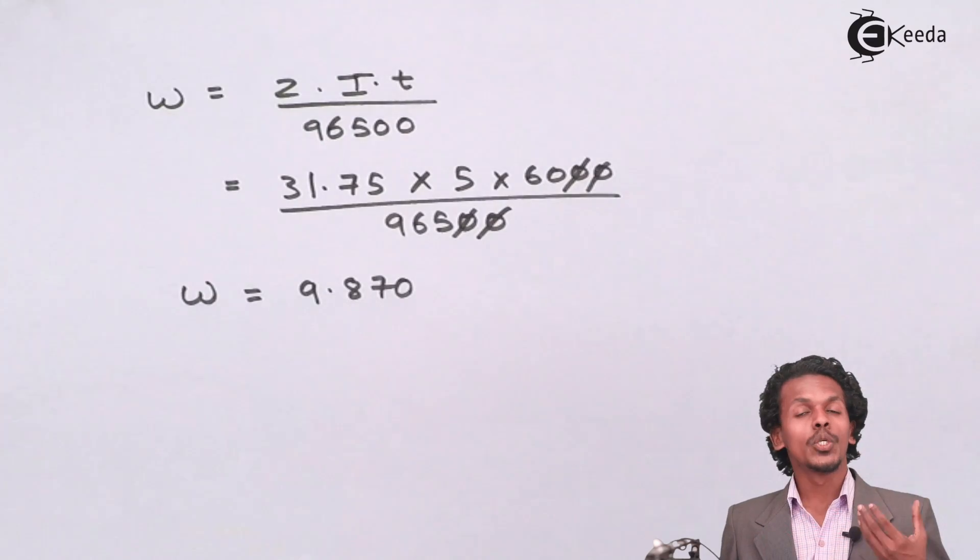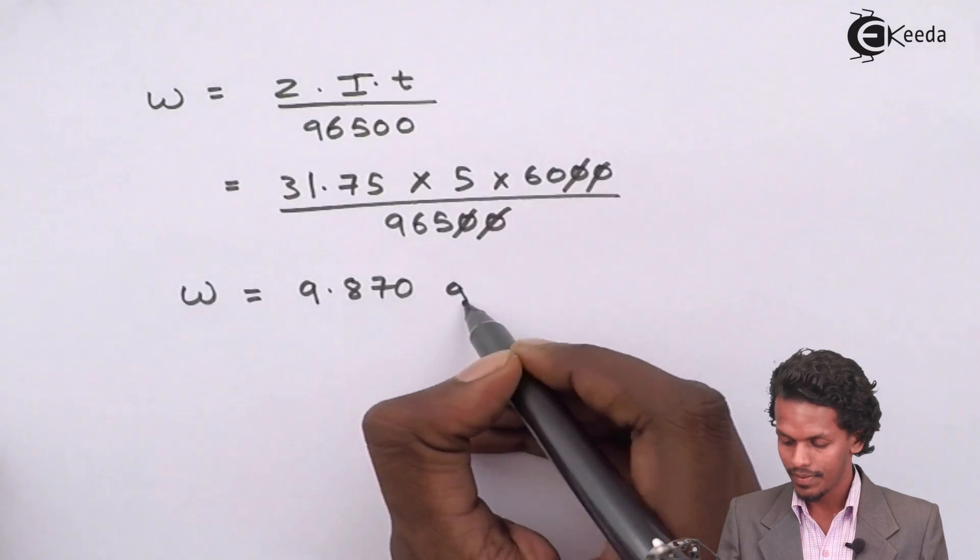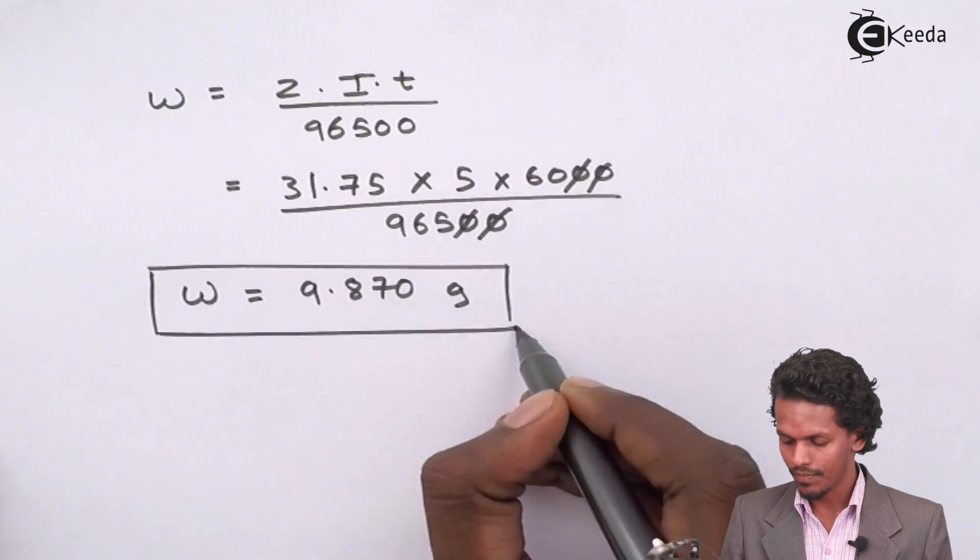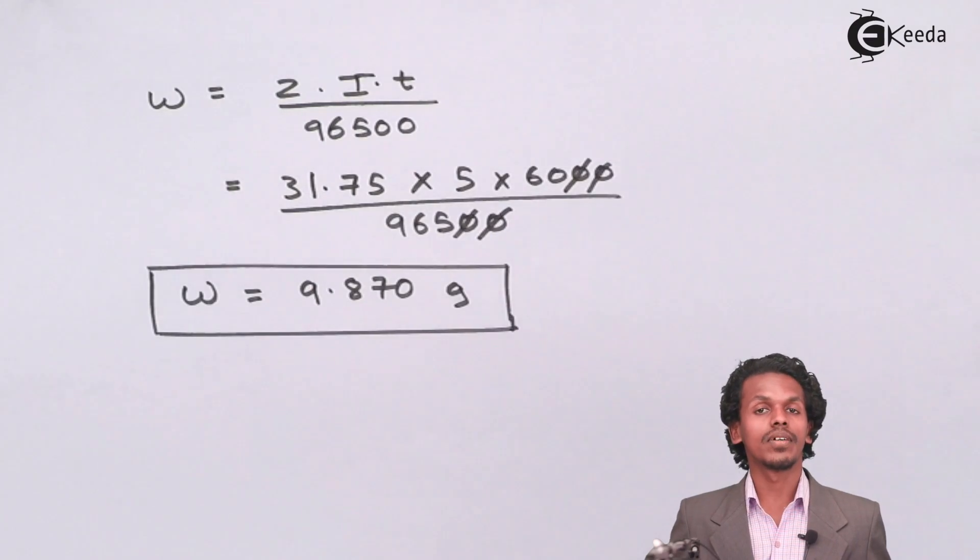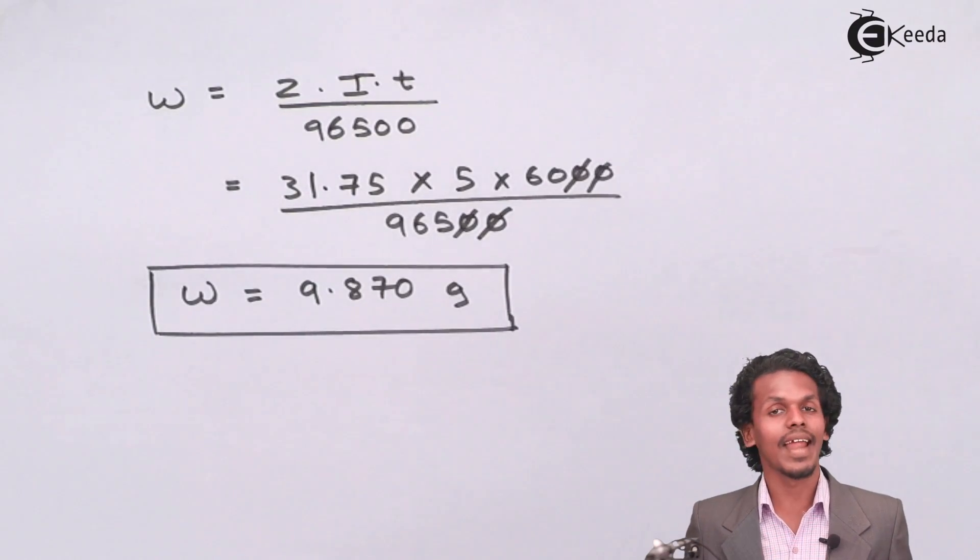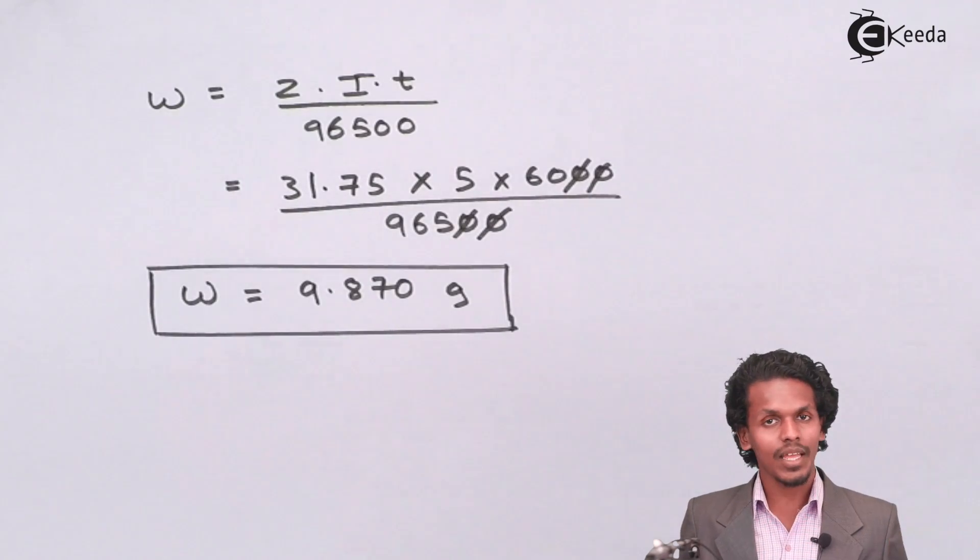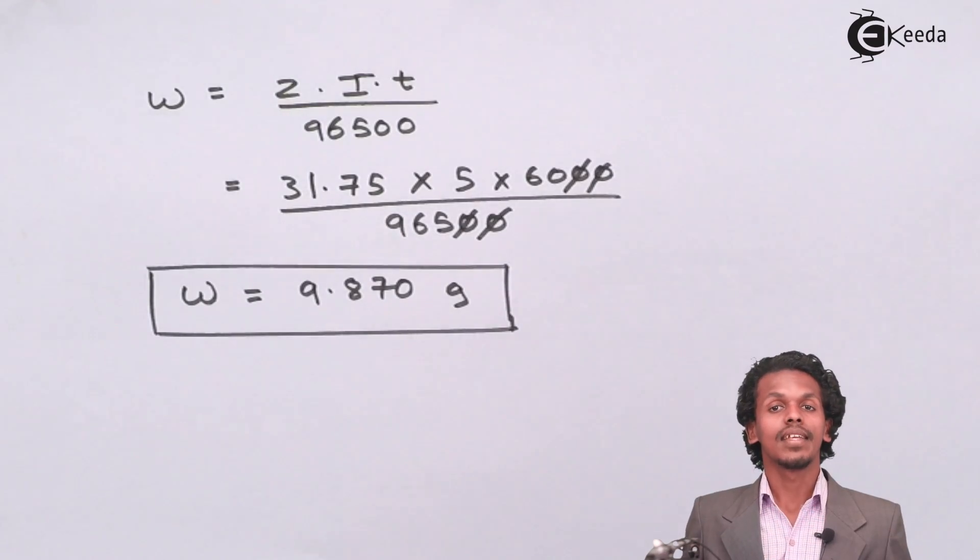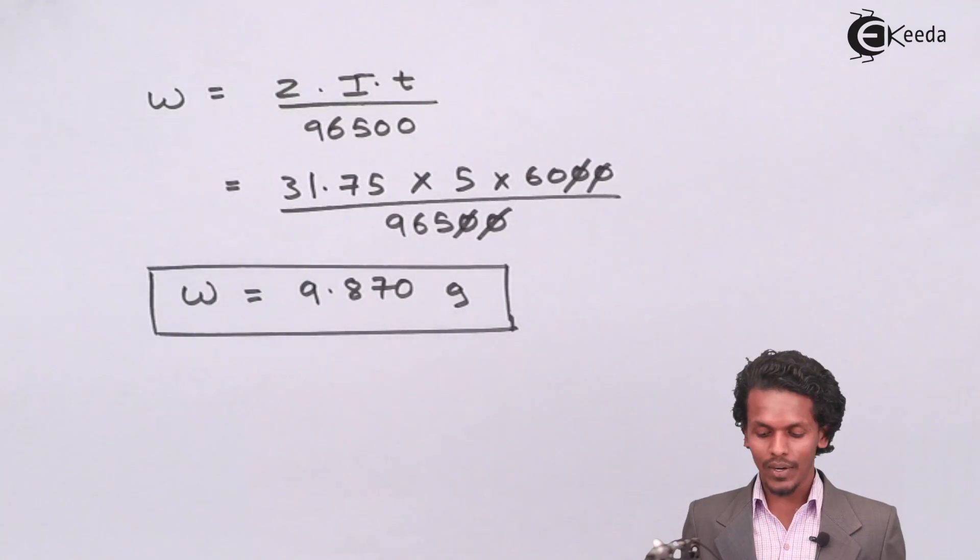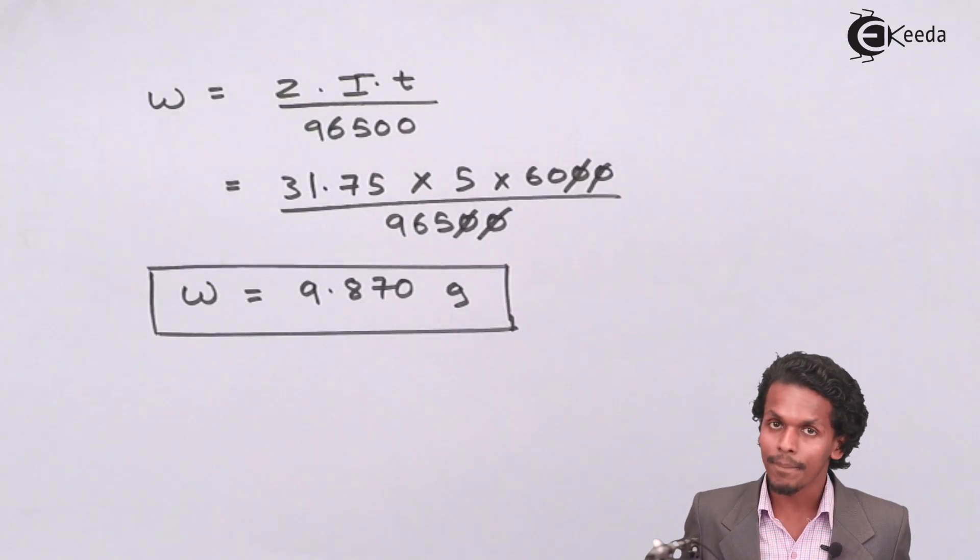The unit of the weight in this case will be gram. Because we have taken the time in seconds and the molecular weight in gram per mole, the answer we have got will be in the unit of gram.